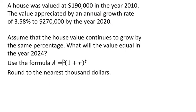Here's a nice one: a house was valued at $190,000 in 2010. The value appreciated by an annual growth rate of 3.58% to $270,000 by 2020. Assuming the house value continues to grow by the same percentage, what will the value equal in 2024? We'll use the formula and round to the nearest $1,000. Take a minute and try this one out.